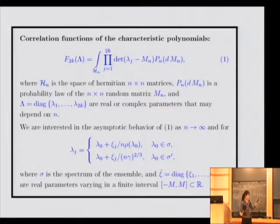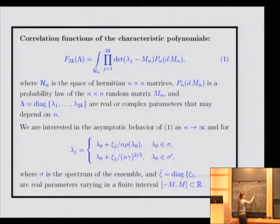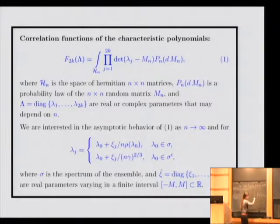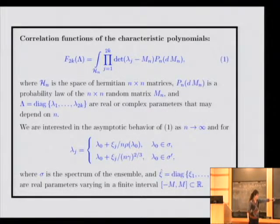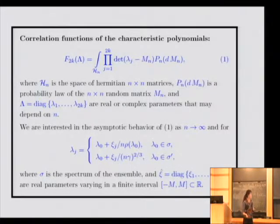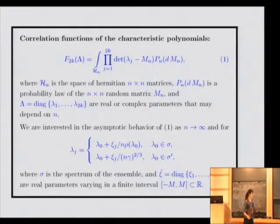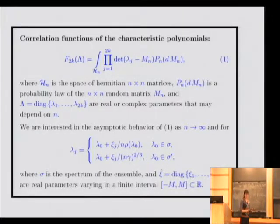This corresponds to such lambda. Again, gamma is a constant such that ρ behaves like this coefficient divided by π multiplied by the square root. Here the parameters ψ_j lie in any finite interval of the real axis. When you say something with real or complex — do you mean the diagonal elements are real? No, this is not the diagonal elements. This is the parameter λ_1, λ_2, which are real parameters. It's not a matrix.